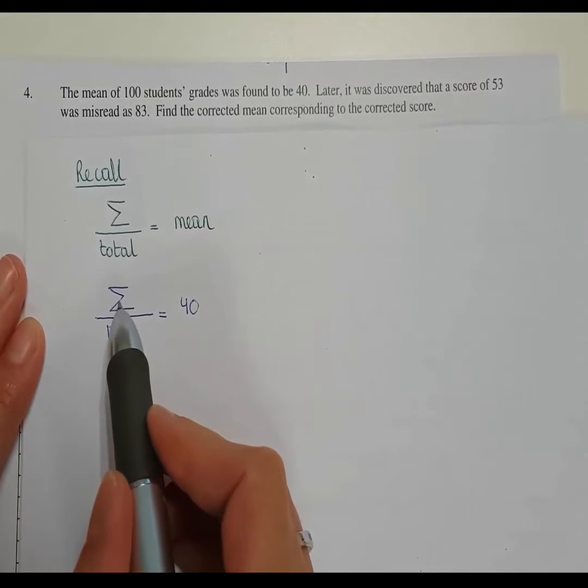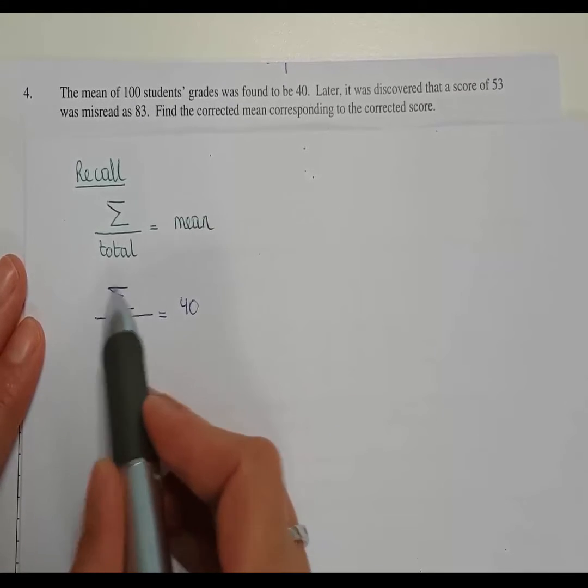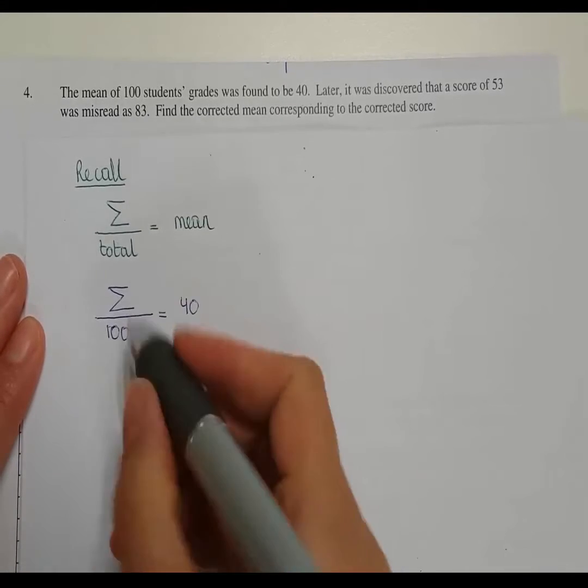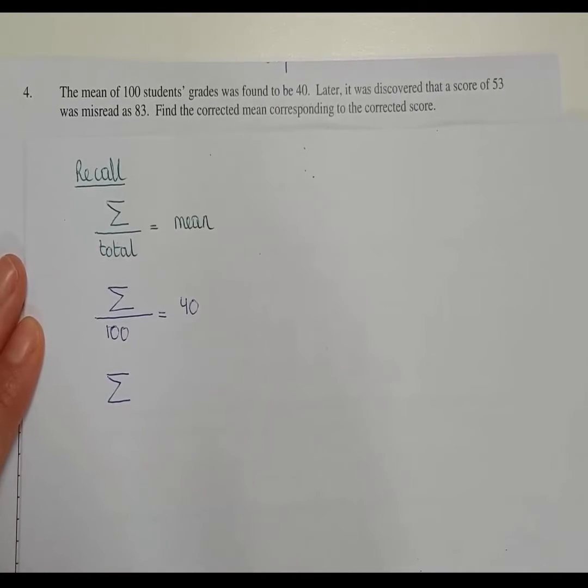So let's find what the sum is of all the numbers. The sum is divided by 100. So how do we find the sum? How do we get the sum all by itself?